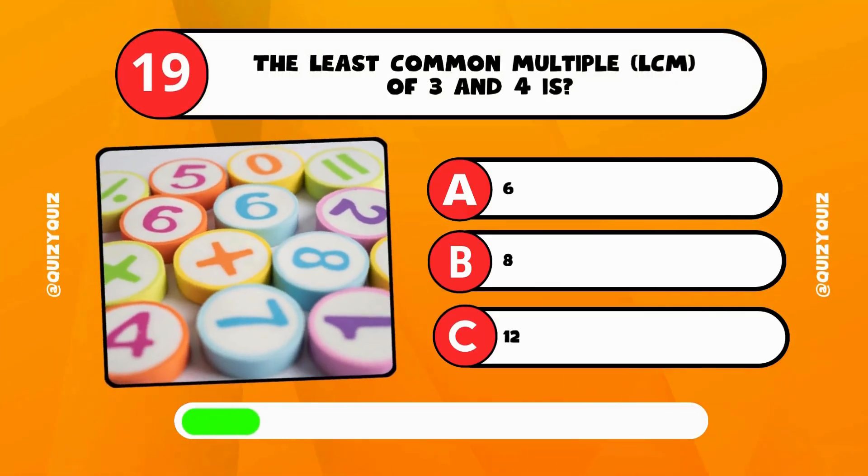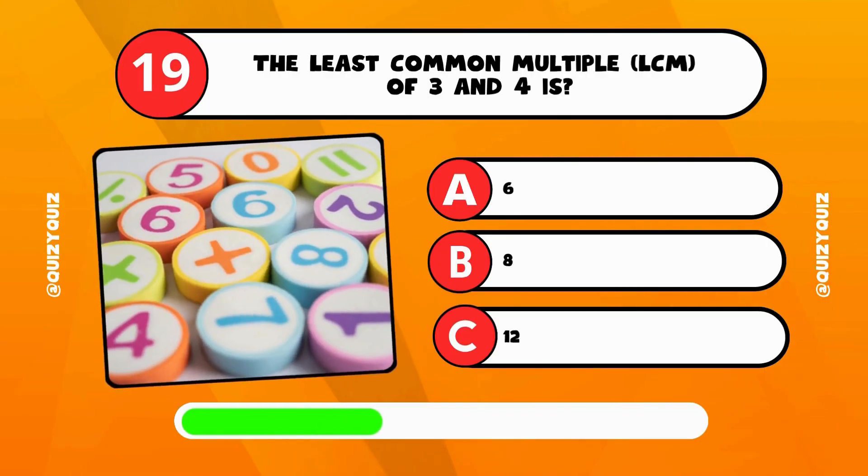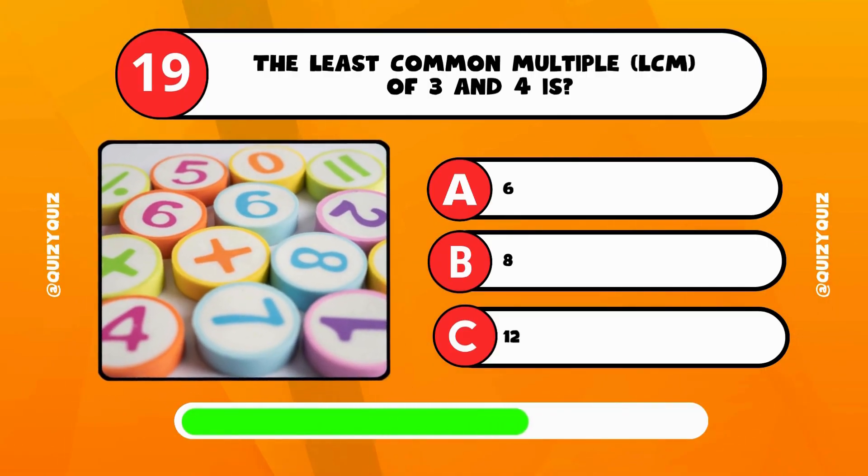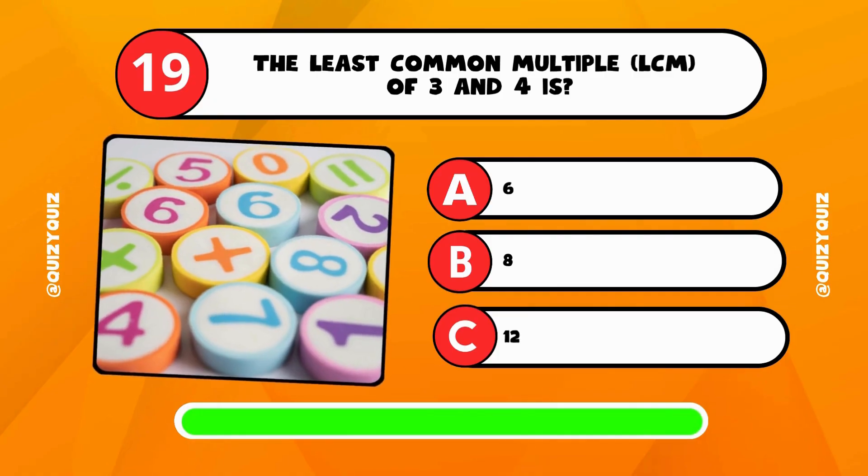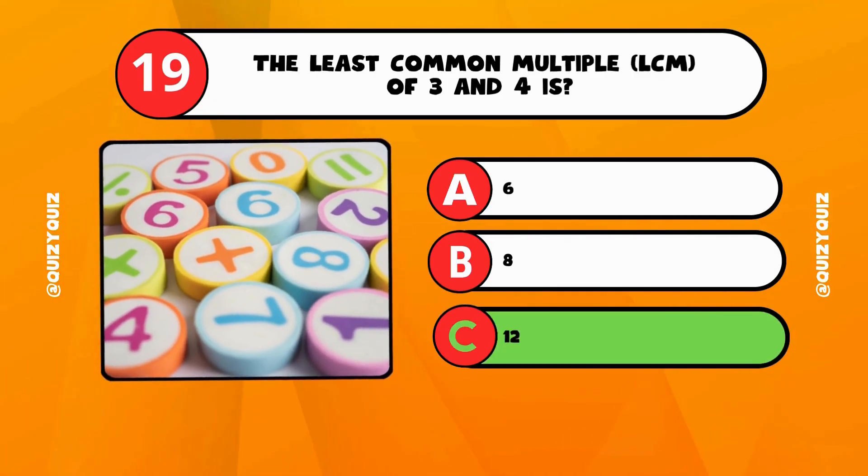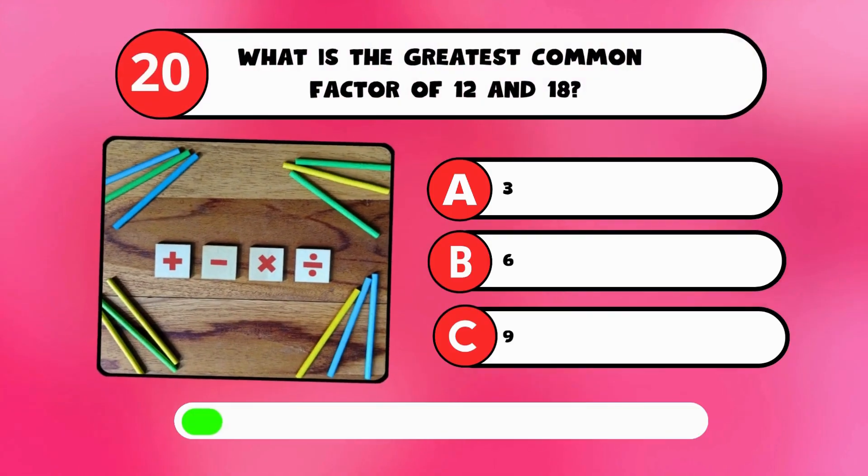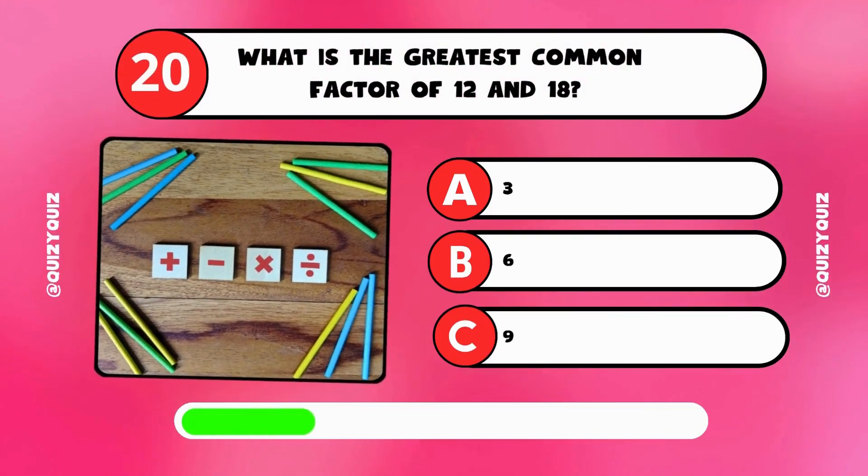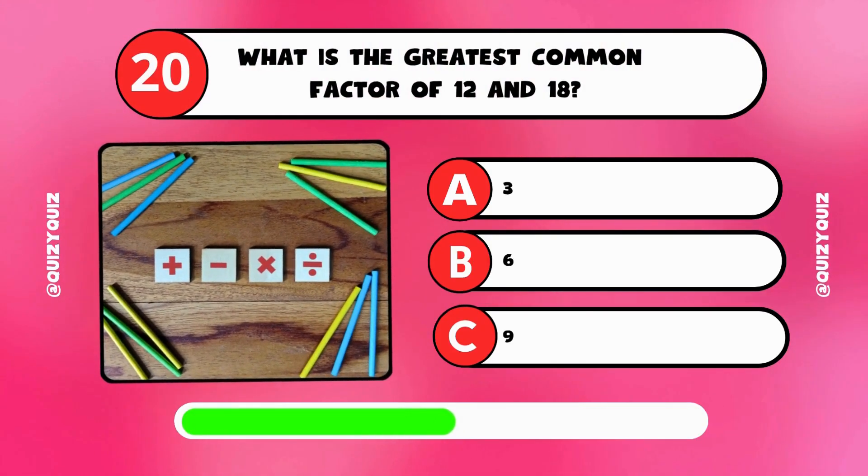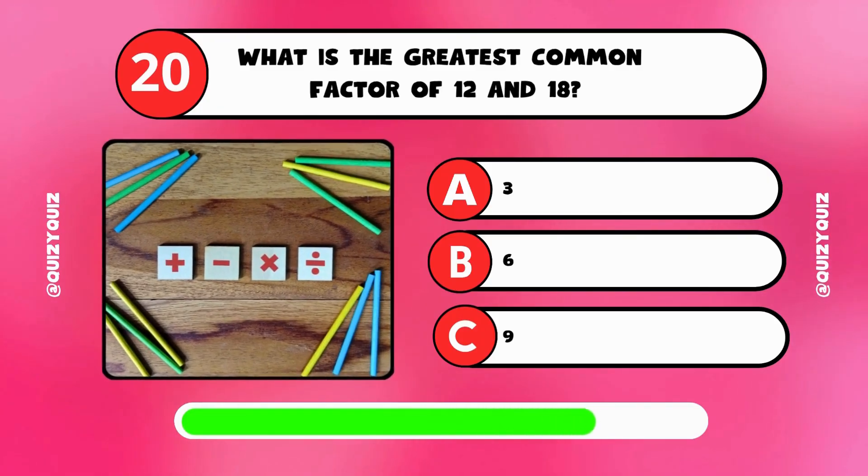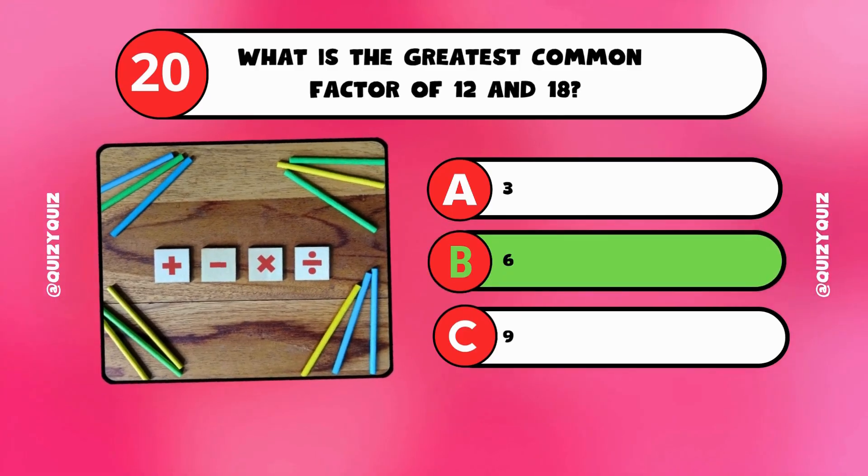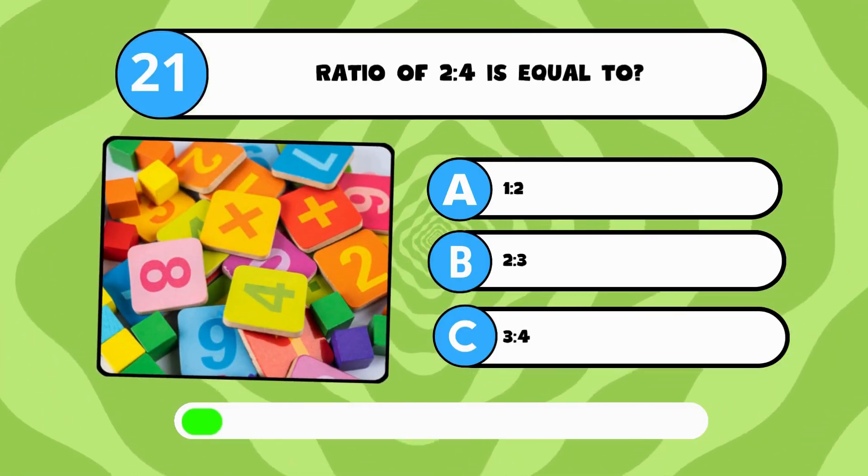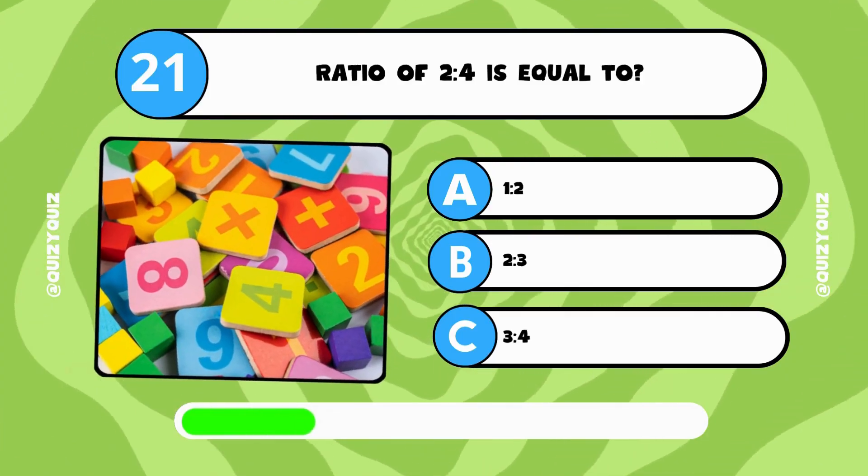The least common multiple of 3 and 4 is? What is the greatest common factor of 12 and 18? Ratio of 2 to 4 is equal to?